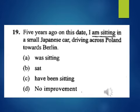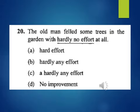Question 19: Five years ago, on this date, I am sitting in a small Japanese car, driving across Poland towards Berlin. A, was sitting; B, sat; C, have been sitting; D, no improvement. Question 20: The old man felled some trees in the garden with hardly no effort at all. 'Hardly no effort' is underlined. A, hard effort; B, hardly any effort; C, hardly any effort; D, no improvement.